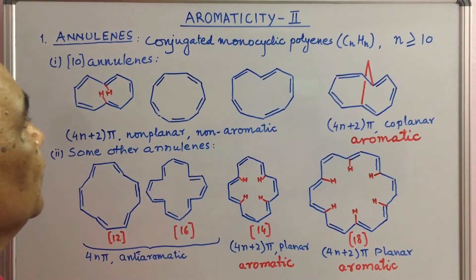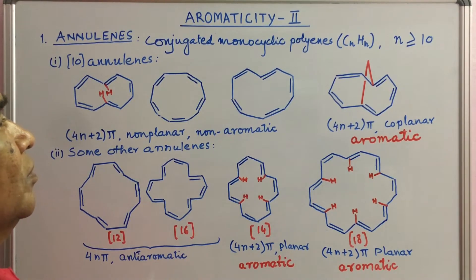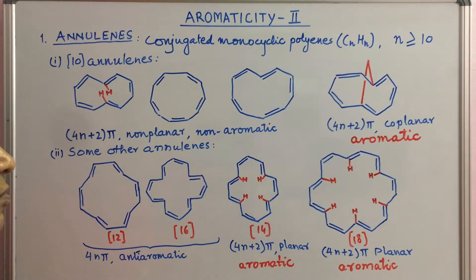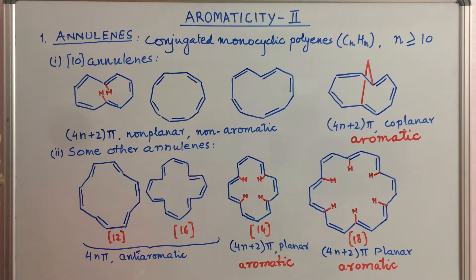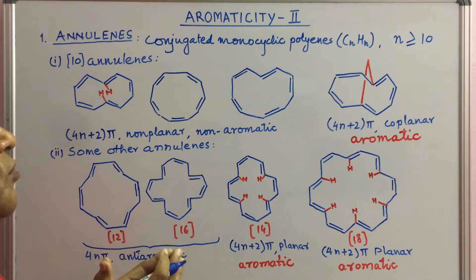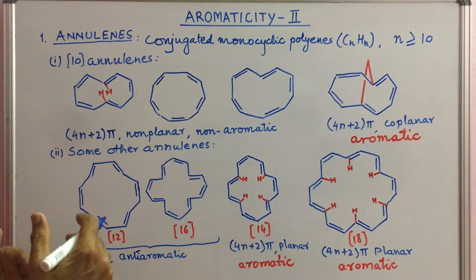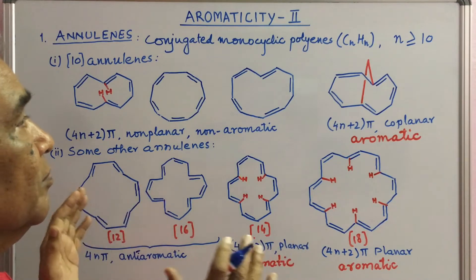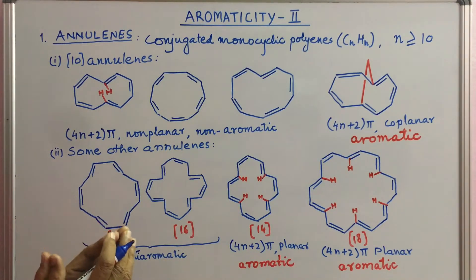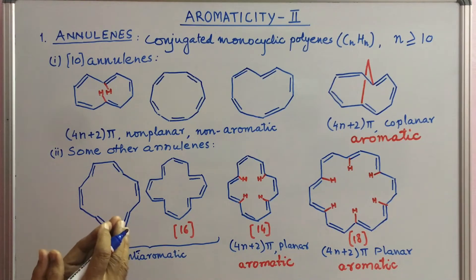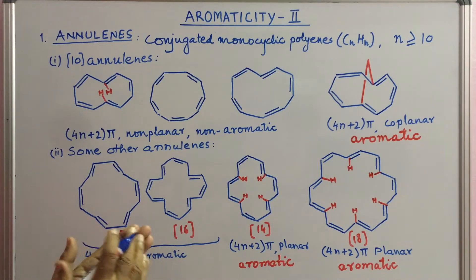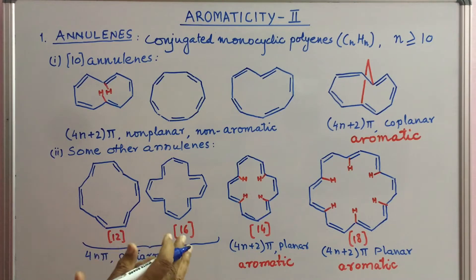So far we have seen that coplanar conjugated pi bonds are delocalized. In cyclic systems, these pi bonds are highly delocalized — you can say they are compact delocalization. This gives rise to stability in the cyclic system and imparts aromaticity. In the last video we saw that Huckel's rule states 4n+2 pi electrons must be present on coplanar atoms to make a compound aromatic.